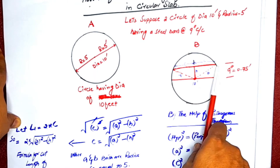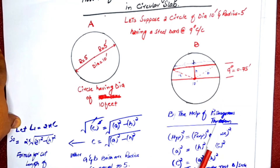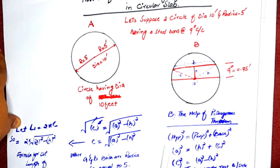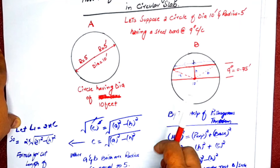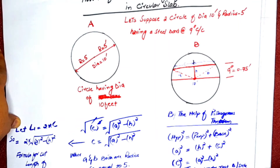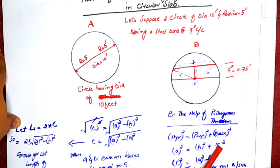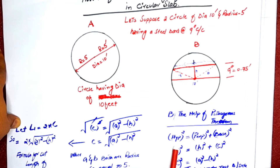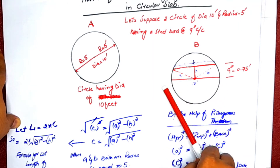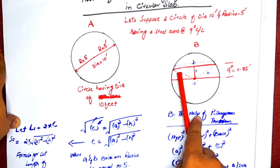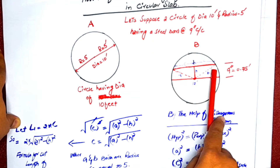We can find the cut length of steel bars using the Pythagorean theorem. The Pythagorean theorem is a formula for a triangle having three sides: one is called the hypotenuse, the second is the perpendicular, and the third is the base. Here is the first cut length, or the first bar.